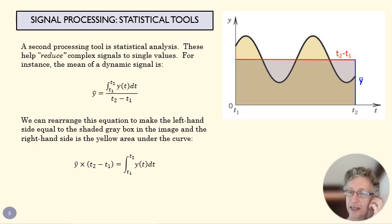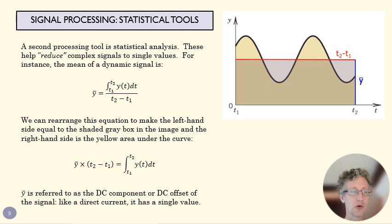But with a more complex or stochastic data set, it would be hard to find that mean just by observation, so this is a useful tool. We call that y bar, the average amplitude, the DC component or the DC offset of the signal.